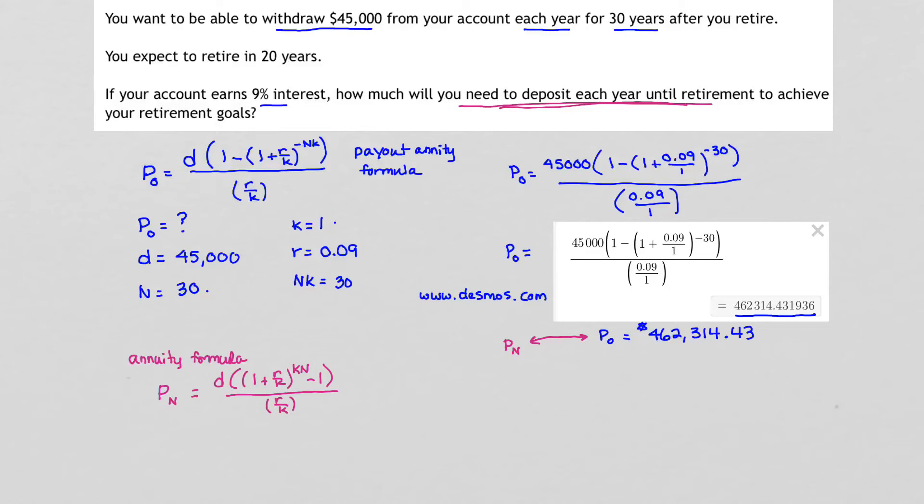How do we use this annuity formula to finish our problem? We are looking to find how much we want to deposit each year. That means in our annuity formula, we are searching for the value of D. Now we happen to know what R is. R is still 0.09. K is the number of times we're depositing, and since we're depositing each year, that means K is 1. N is actually pertaining to this number right here. We are expecting to retire in 20 years. That means we're going to be depositing money for the next 20 years. So N now becomes 20.